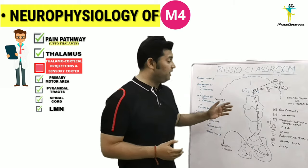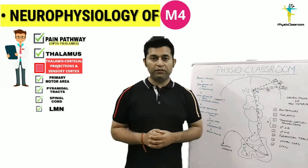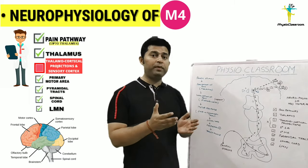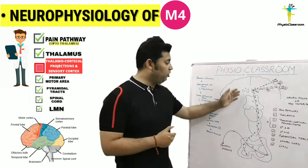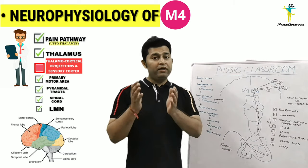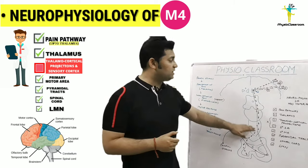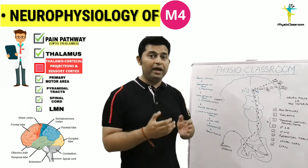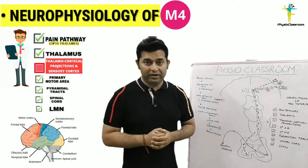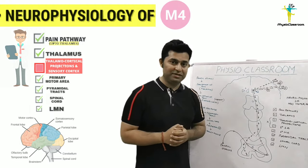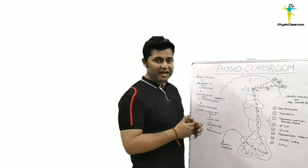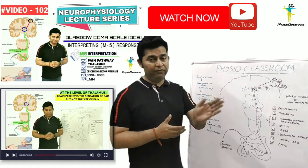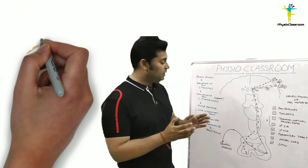Now let's move on with the neurophysiological explanation and interpretation of the M4 motor response. A physiotherapist can utilize valuable information from this neurophysiological explanation to identify which brain structures or pathways are intact and which are not functioning properly, and accordingly design a rehabilitation program. This will be easy to understand if you have watched my previous video on the M5 motor response interpretation.